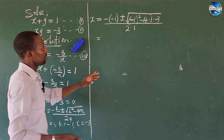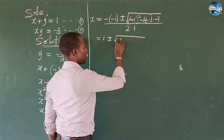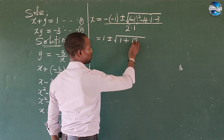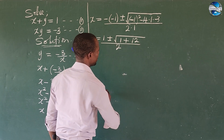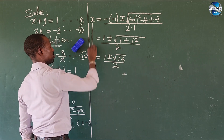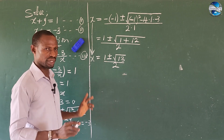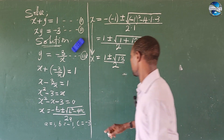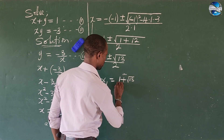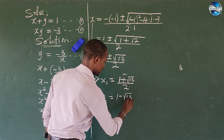So let's simplify. We're going to have 1 plus or minus the square root of 1 — the minus times minus gives us plus — and 4 times 1 times 3 gives us 12. Everything all over 2. So if we add up, we get 1 plus or minus the square root of 13, all over 2. So our x1 equals 1 plus root 13 all over 2, and x2 equals 1 minus root 13 all over 2.